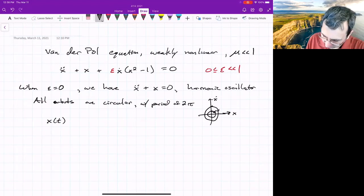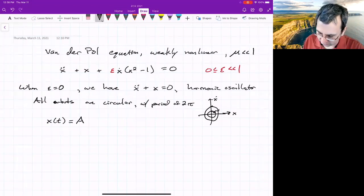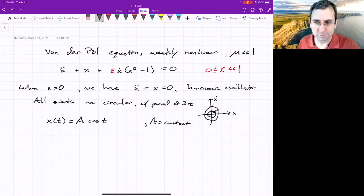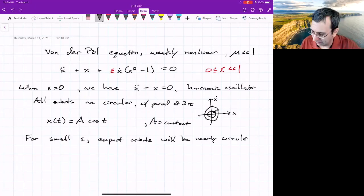They all look like, if you were to look at x as a function of time, there'll be some amplitude A, a constant. If we choose our time axis appropriately, this is A cosine t. There's not even a phase if we choose time equals zero appropriately. Now for small epsilon, we expect that the orbits will be nearly circular and that they'll repeat approximately every two pi.